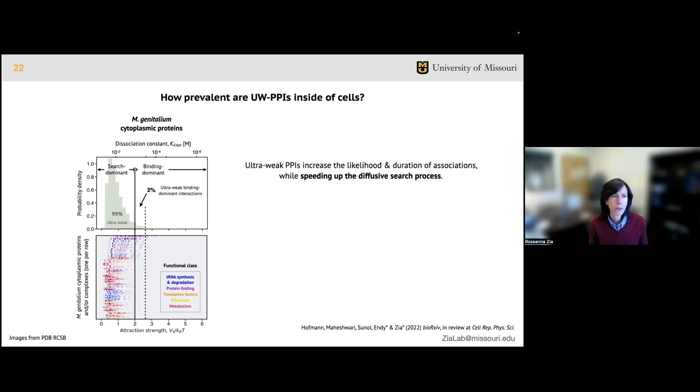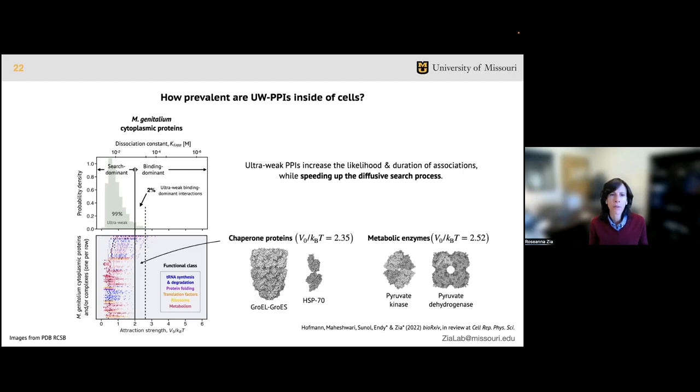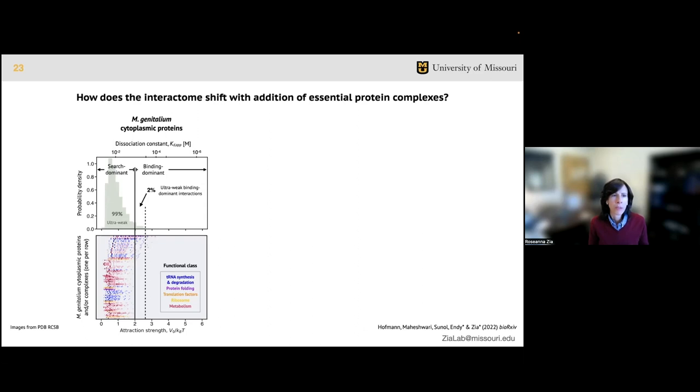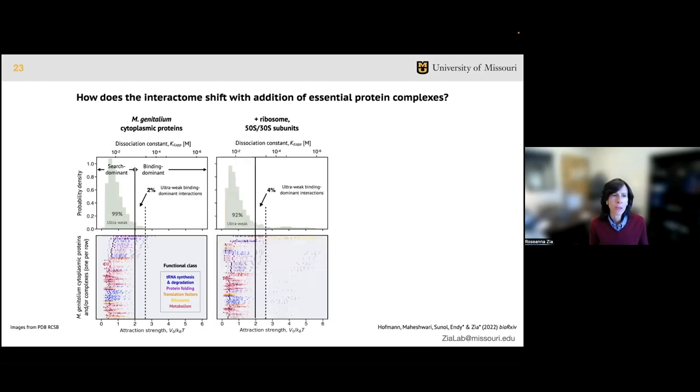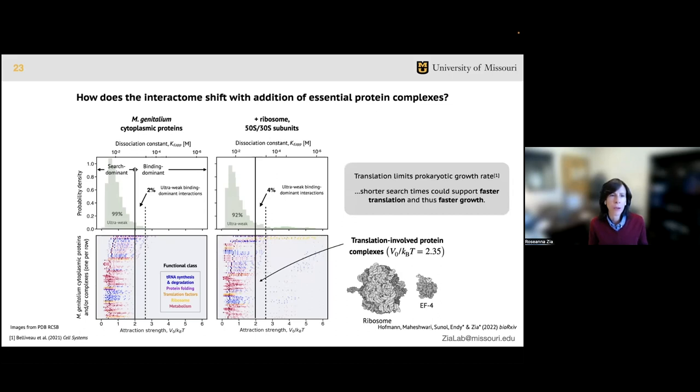First we focus on cytoplasmic proteins alone, where the upper plot shows the overall probability distribution of attraction strengths across all pairs, and the lower plot shows the probability distribution experienced by individual proteins shown in each row. Each color corresponds with that protein's broad functional role - so color is function - such as translation, metabolism, or protein folding. We find that almost all such electrostatic interactions are ultra-weak, and a small fraction are strong enough to be binding dominant. We're pushing these through a sieve to look for things that have evaded detection before but still matter.